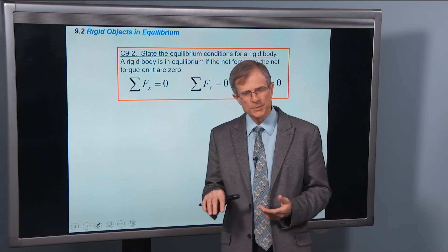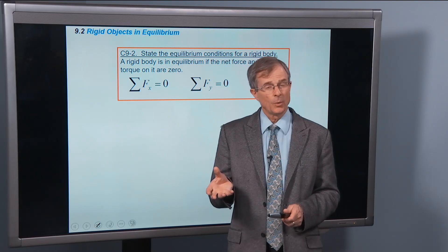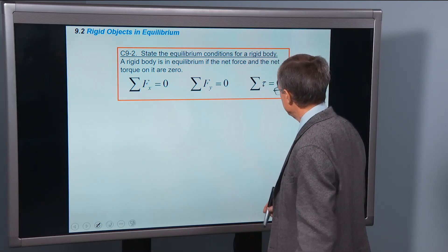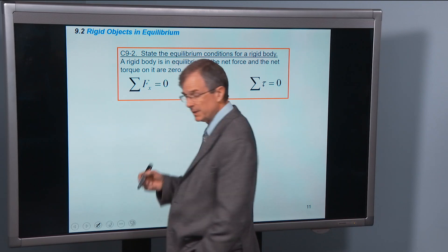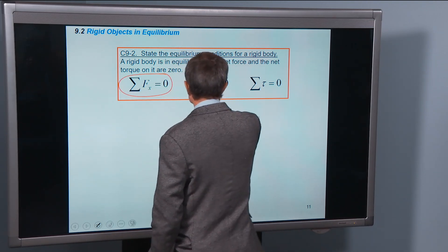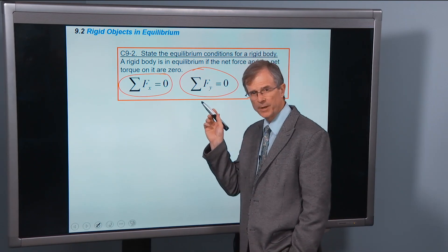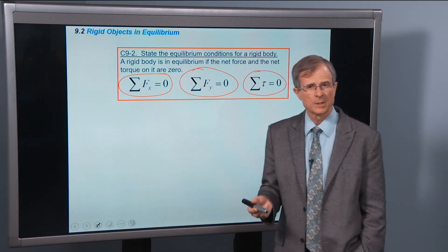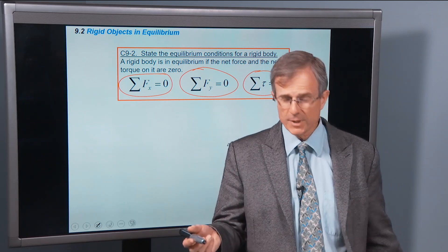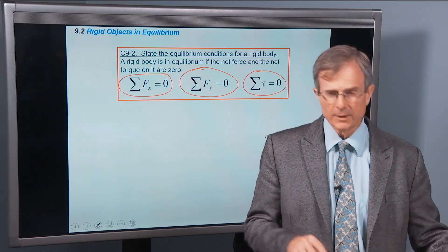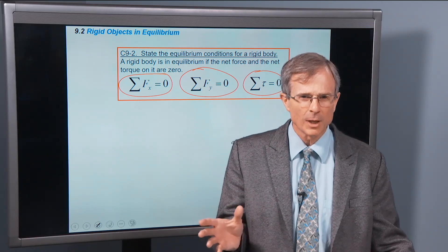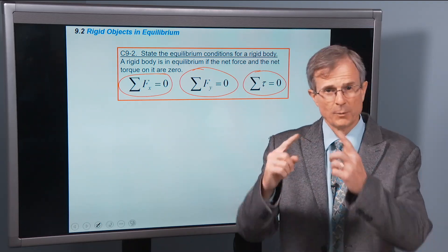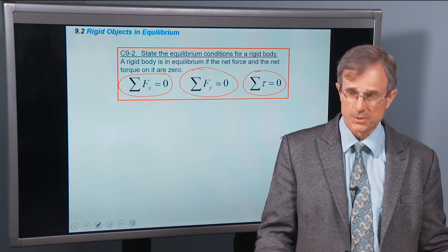But now we're throwing in an extra wrinkle and saying, what if it's turning? And what about the torques? The answer is that we're going to define equilibrium to be same as before. Therefore, there's no net force acting on the object in the x or the y direction. And also, there's no net torque. So we add up all the torques on the object. And if those add up to zero, noting that the torques need to be positive if it's a counterclockwise rotation, or negative for a clockwise rotation, they can cancel each other out. That's equilibrium.